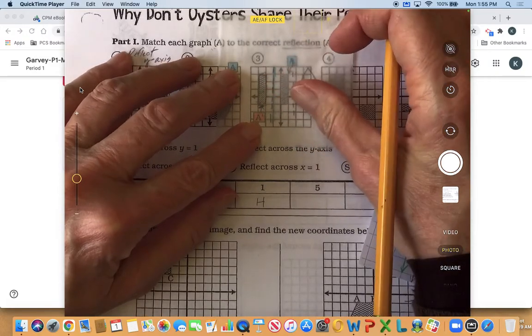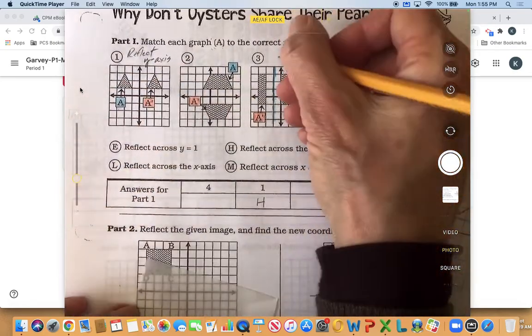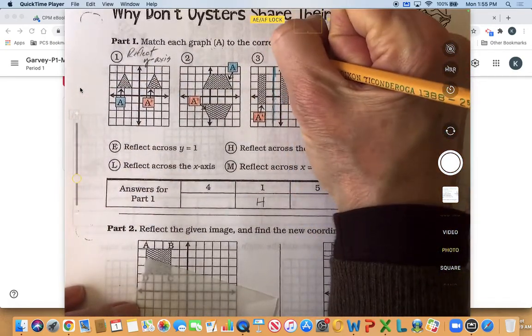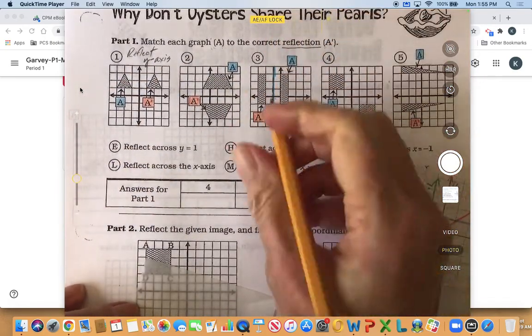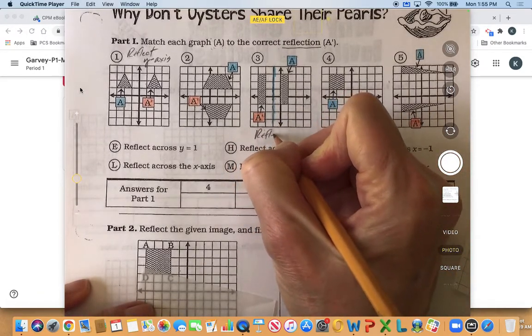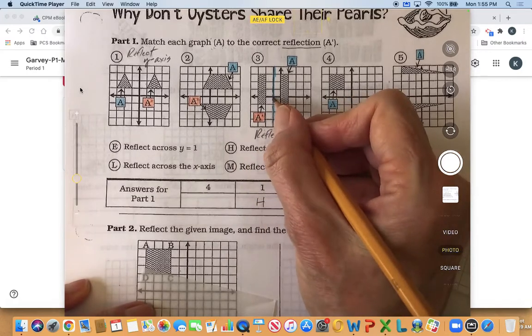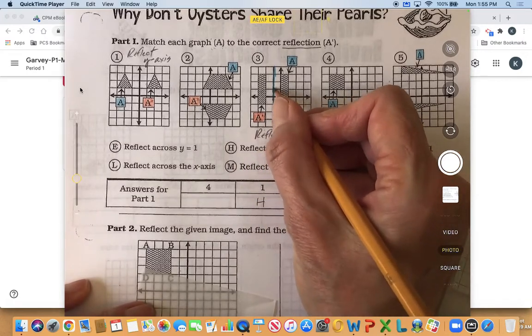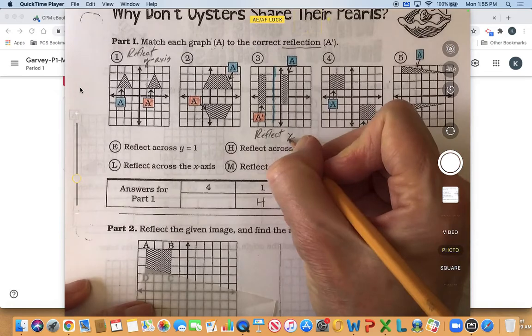Rectangle goes right over the top. And so in this case it looks like the line of reflection, and I'm going to write it below this time, is we've reflected across x is equal to negative one.